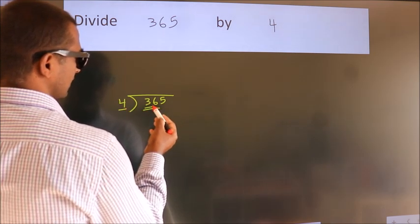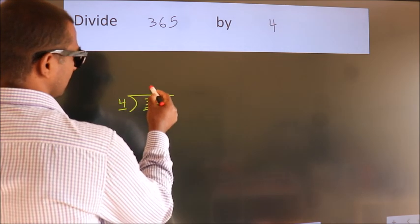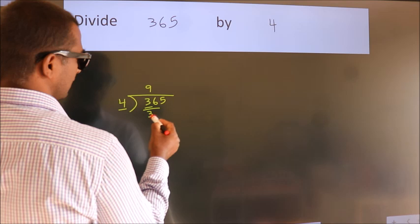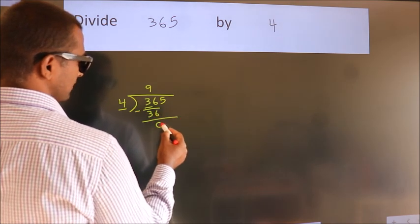36. When do we get 36 in the 4 table? 4 times 9 is 36. Now we should subtract. We get 0.